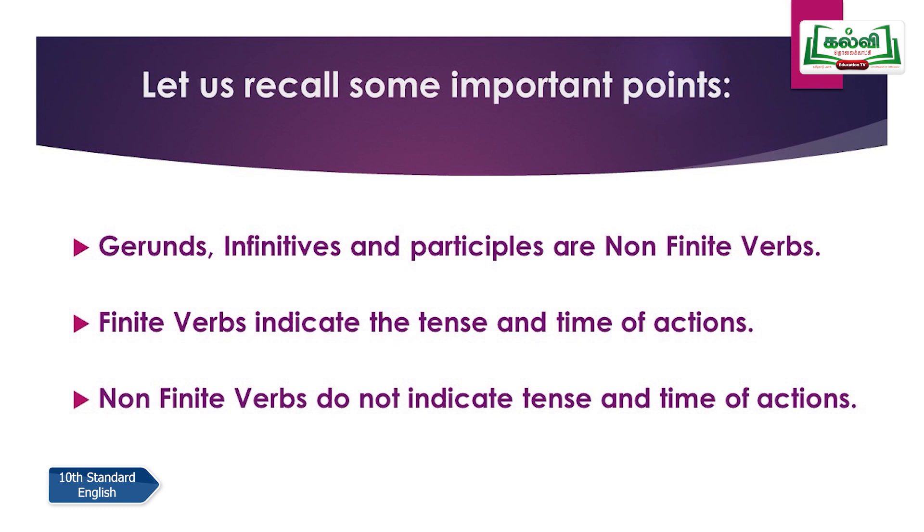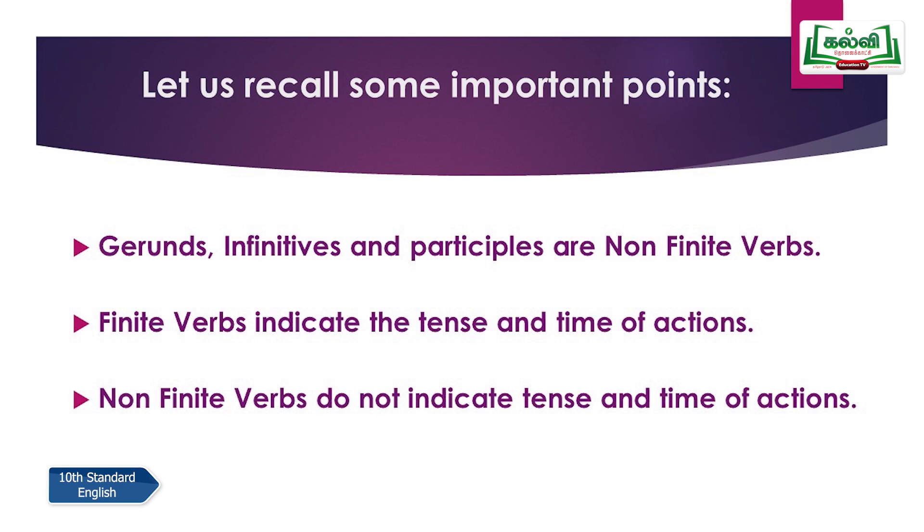If you learn this very clearly, you will easily understand what phrases and clauses are. Finite verbs indicate the tense and time of actions — present, past, and future. In finite verbs, it shows what tense and time of action we have used. For example, 'see' (S-E-E) shows it is a present form, so it is a finite verb. While you say 'seeing', it would not show whether it is present, past, or future — so that is a non-finite verb.